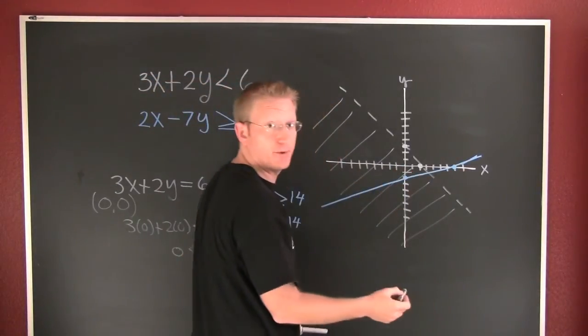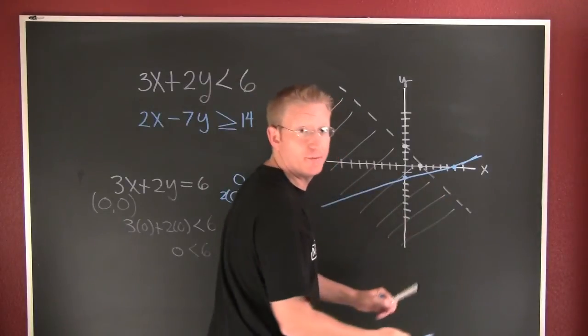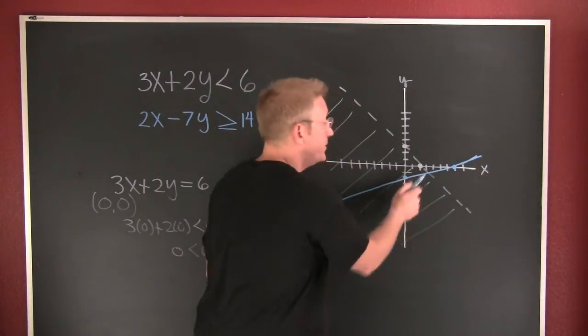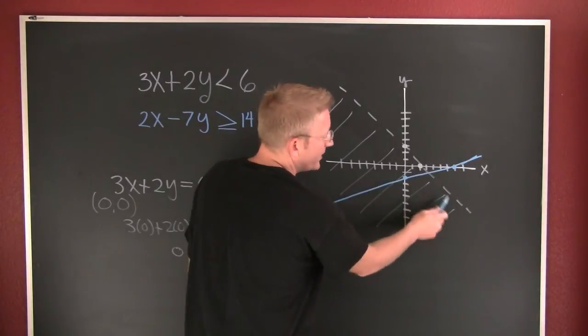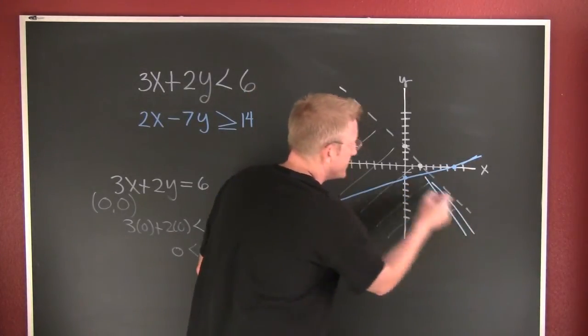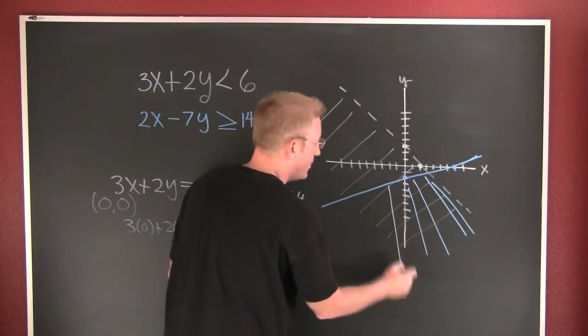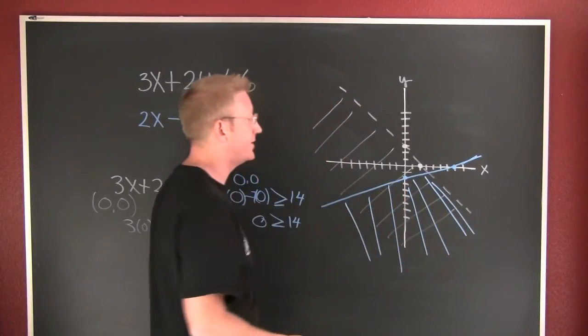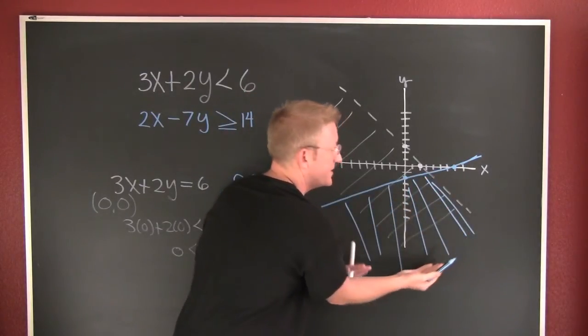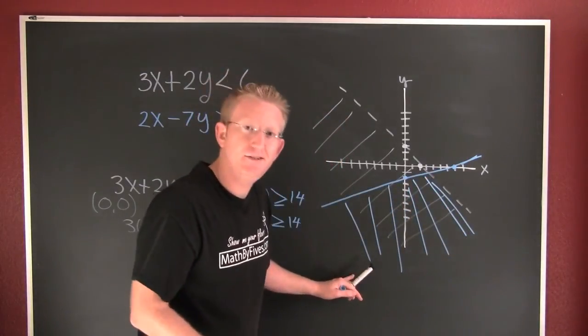So do I shade towards the point or do I shade away from the point? I shade away from the point. I want to shade everything below that blue line, but I only want to include this stuff in the overlap, so my solution set is all this stuff down here.